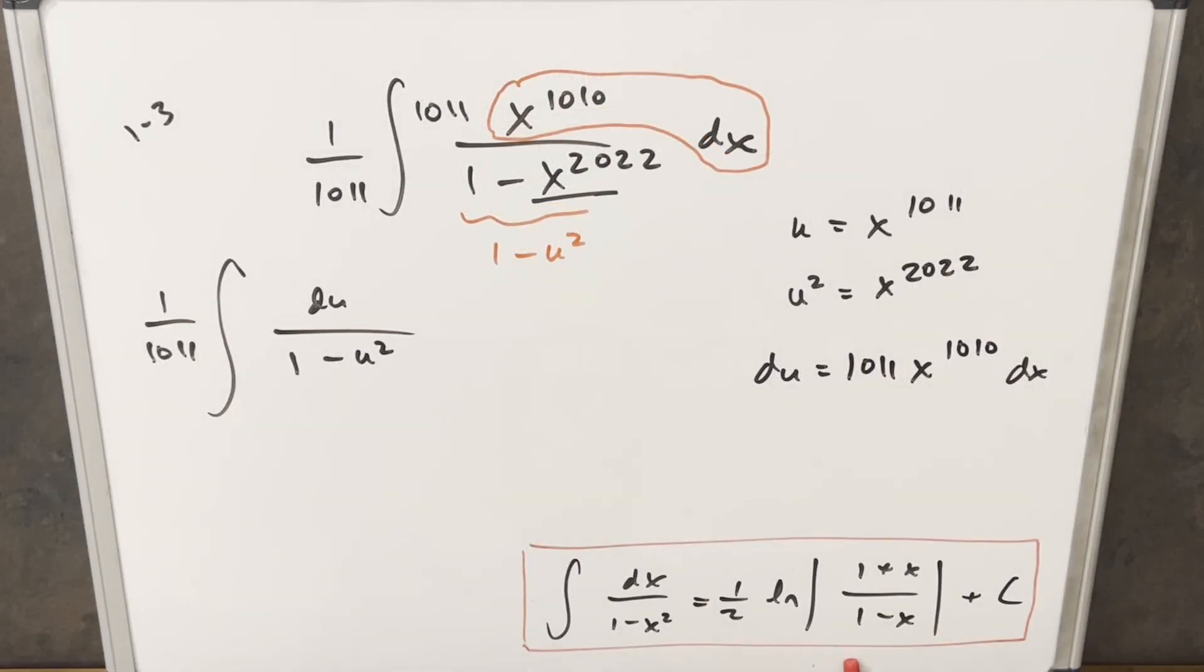Okay, we have this formula down here at the bottom. That's just going to allow us to express this in terms of natural logs. And it's actually really easy to get this formula just by factoring the denominator as 1 plus x times 1 minus x and doing partial fractions, you'll get this. But I just thought I'd skip a step and use the formula to make it a little quicker.